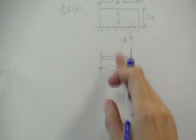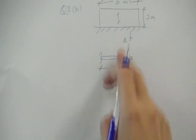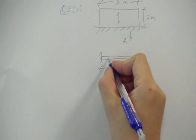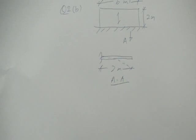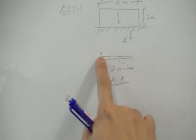So this cantilever or this slab will bend like a cantilever in hogging. In hogging. Or in other words, the tension is at the top.